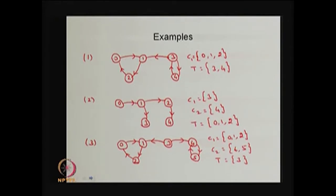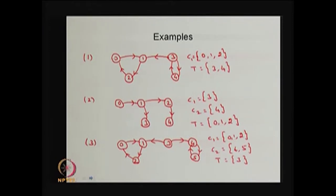In the second example, which also has five states, states 0, 1, and 2 are transient states. States 3 and 4 each form a different closed communicating class consisting of only one element. You cannot include state 1 with state 3 or state 2 with state 4 to form a closed communicating class. Therefore states 3 and 4 are absorbing states, and this chain is also a reducible Markov chain.